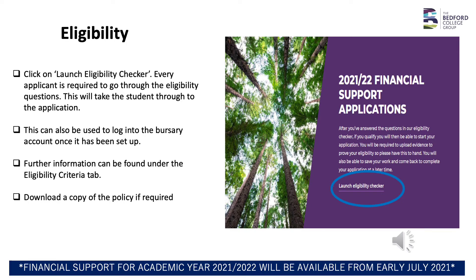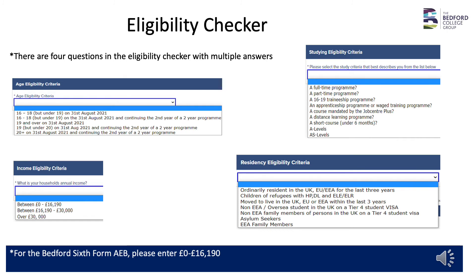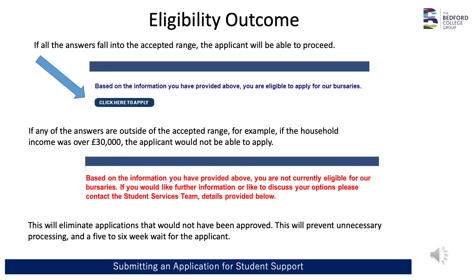Download a copy of the policy if required. The eligibility checker will take you through a series of questions based on the learner's age, their study programme, household income, and residency status. Once you have answered these questions and if you are eligible, you will be taken directly to the Pay My Student page where you will be required to create an account. If all answers fall within the accepted range the applicant can proceed; if any answer falls outside the accepted range — for example if household income is over £30,000 — the applicant will not be able to apply. This eliminates applications that would not be approved and should prevent unnecessary processing and a five to six week wait.